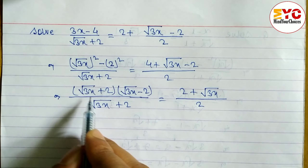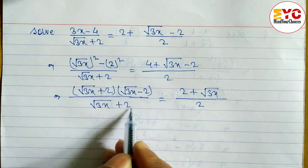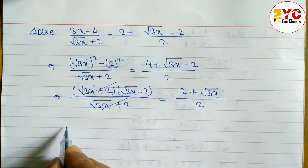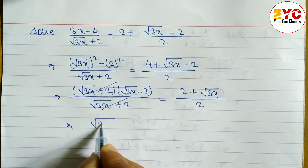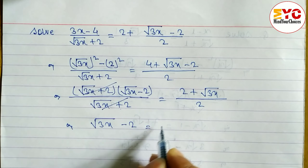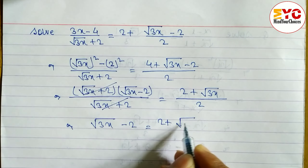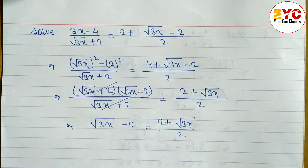You can see here the same term √(3x) + 2 appears in both numerator and denominator, so we can cancel it. What remains is: √(3x) − 2 = 2 + √(3x)/2.